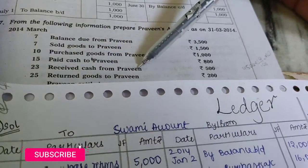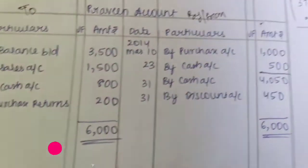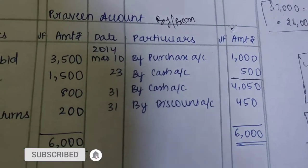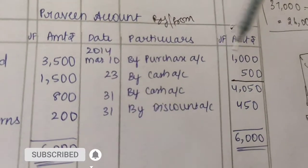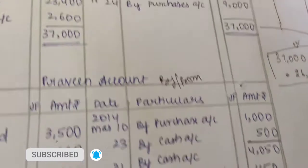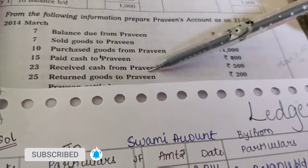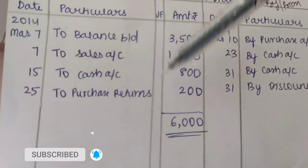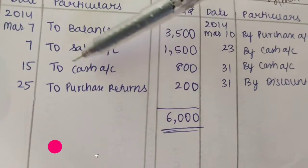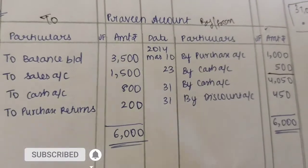Next: received cash from Praveen. The word 'from' appears, so this entry goes on the credit side — by Cash, amount 500. Next transaction: returned goods to Praveen, amount 200. The name comes first, so it goes to the debit side — to Purchase Returns, 200. Up to here we have posted all entries using the shortcut method.